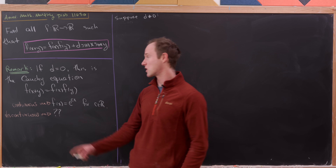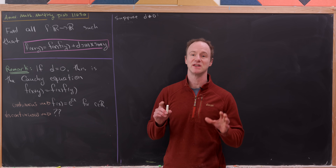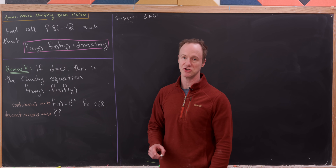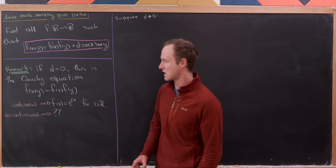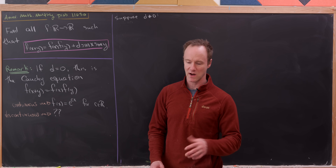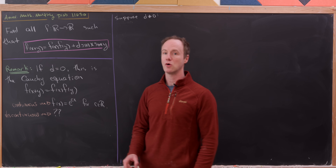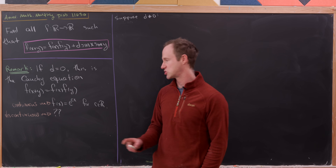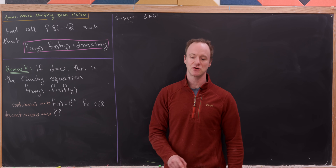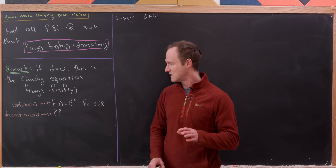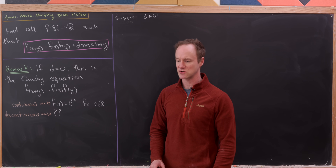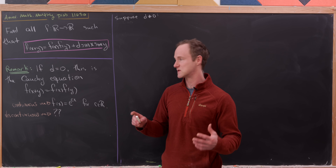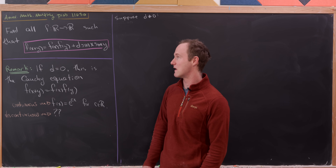Let's start with the case when d equals 0, which will actually not work out. In that case, we have the Cauchy equation: f(x+y) = f(x)·f(y). The only continuous solutions are either the zero function or a family of exponential functions. For discontinuous solutions, that's a pretty hard problem — post in the comments if you have an idea.